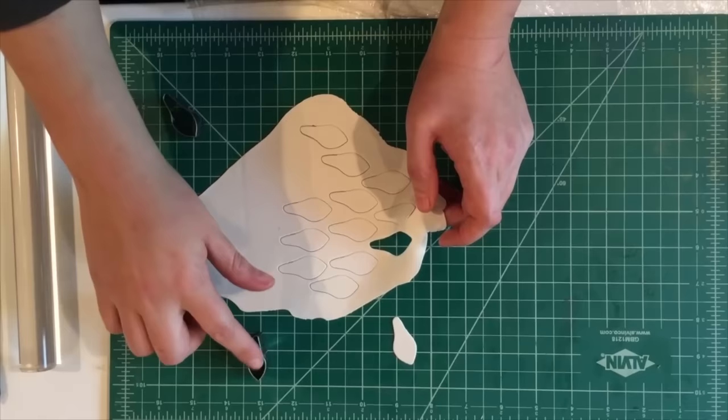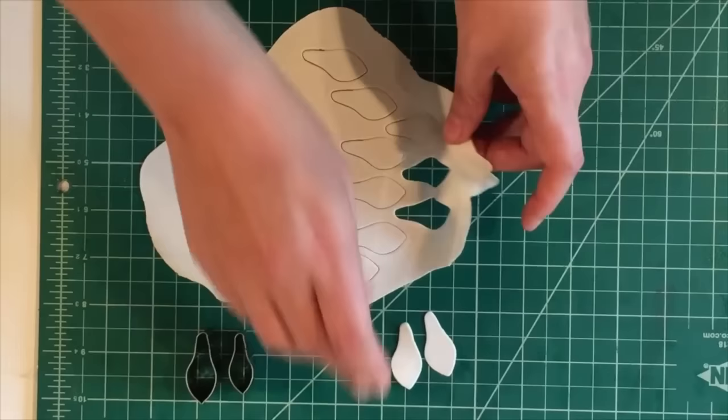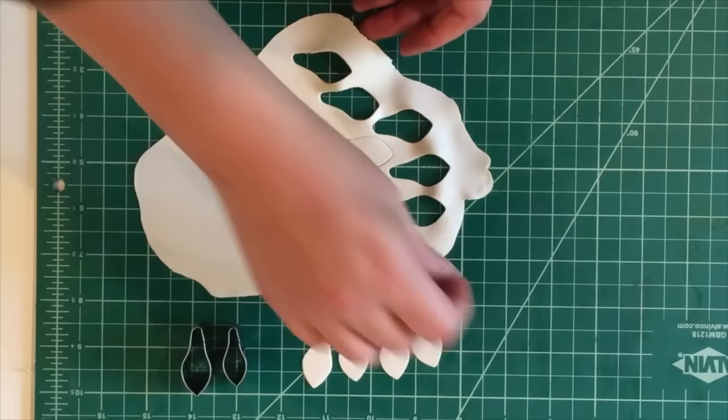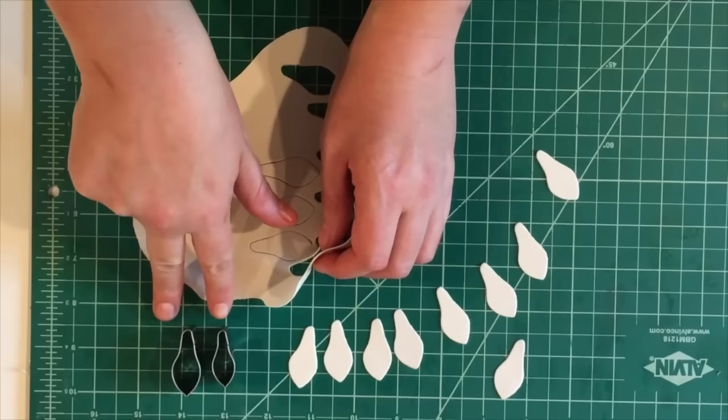So we're moving up from our smallest petal to our next largest size. This is going to be the second of the five cutters. And we're just repeating what we've done on the previous layer. So you want to cut out 12 petals. Ball tool them and roll them up just like we did the previous layer. And then you're also going to attach them just like you did the previous layer.